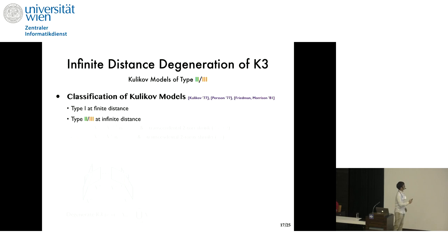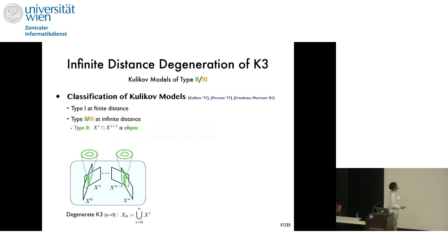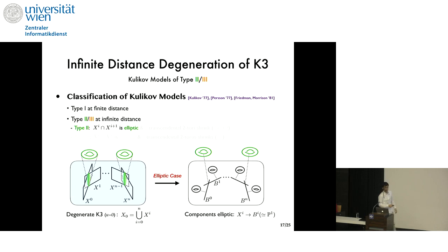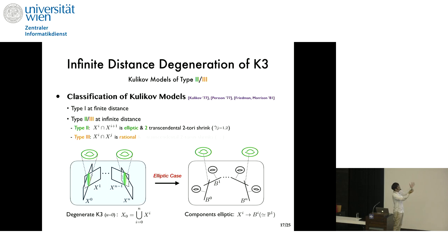Okay now, as stated type 2 and 3 Kulikov are at infinite distance so let me describe their geometry. Type 2 models, the component surfaces of the type 2 models are in chain form as in this picture and the adjacent pair adjacent components meet along an elliptic curve. And in our elliptic case because we're doing F-theory, because K3 is also elliptic we have the components also elliptic over the rational bases Bi. Furthermore it is known that two transcendental two tori should shrink in the limit which I'll denote by gamma 1 and 2. And I'll talk about their importance in physics later. On the other hand, type 3 limits type 3 models we have the components arranged in arbitrary fashion and the components meet along a rational curve instead. And now we have only one transcendental two torus shrinking.